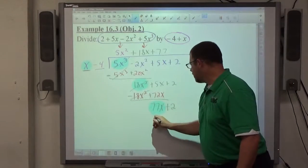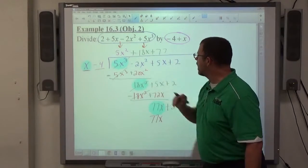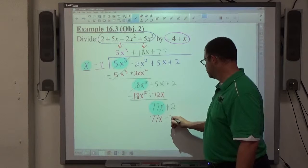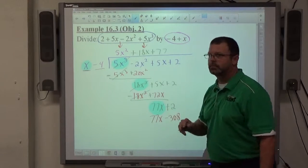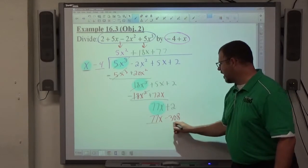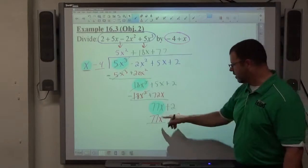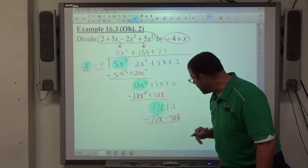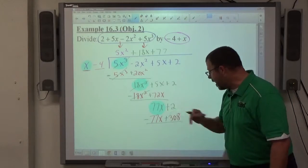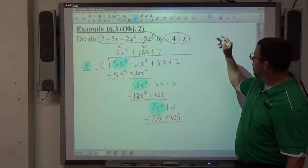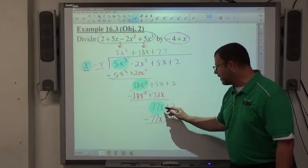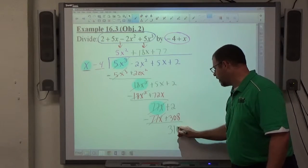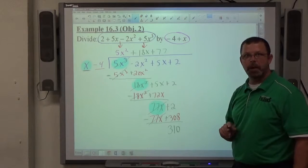77 times negative 4 is negative 308. We change every sign in that product. 77x is positive, make it negative. 308 is negative, make it positive. 77x minus 77x are opposites, they cancel. 2 plus 308 is positive 310. What kind of 310? Positive. So this is the remainder. We're left with the constant.